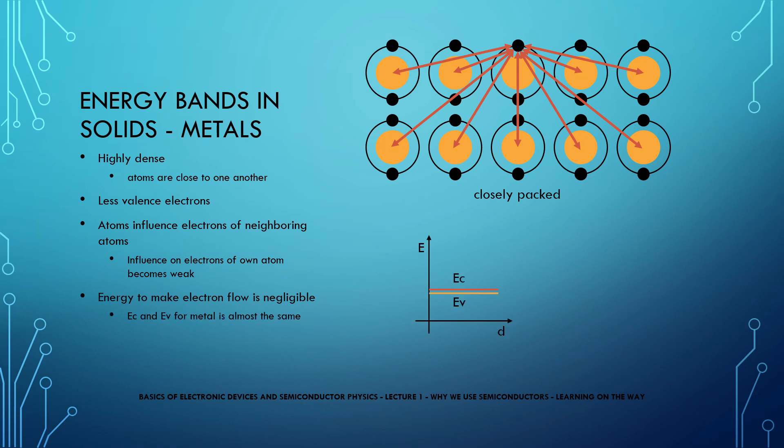Hence one can say that conduction and valence energy for an electron in a metal is almost the same. When we look at the bands, the energies of conduction band and valence band overlap, which suggests that these electrons are loosely bound and can be easily free. This is also the reason why metals have a large number of free electrons.